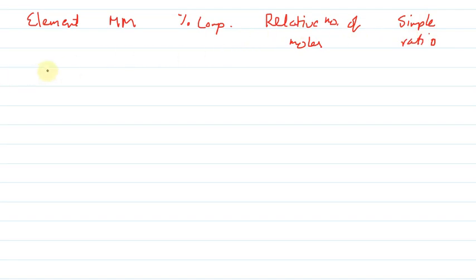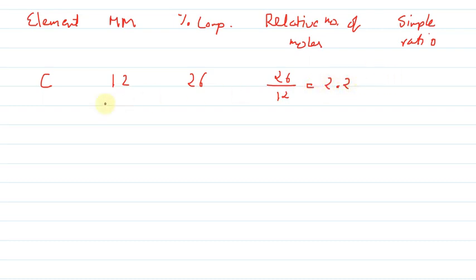Now let us put in the values. The first element is carbon, its molar mass is 12, and its percentage is 26. The relative number of moles will be 26 upon 12, which is nearly equal to 2.2. We will calculate the simple ratio in a moment.